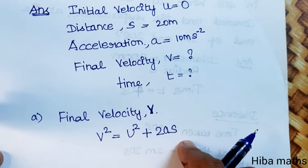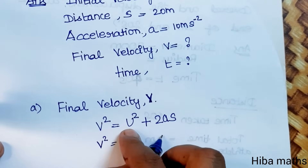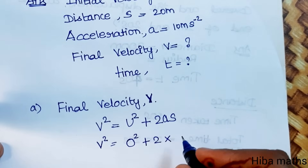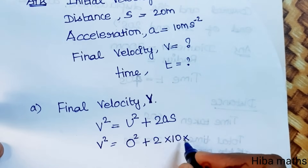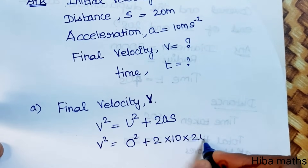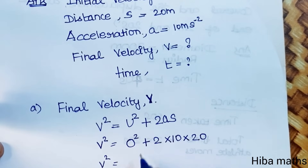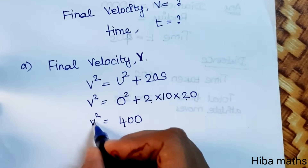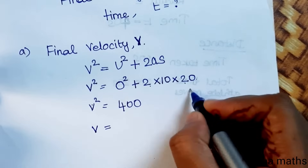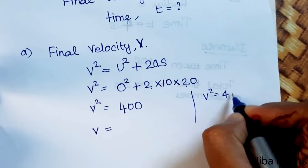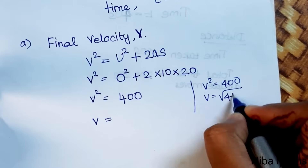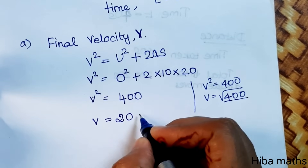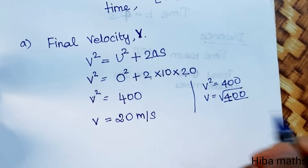v square is equal to u square plus 2as. u is 0, so u square is 0. v square equals 0 plus 2 into 10 into 20, which gives v square equal to 400. Therefore v is equal to root of 400, which is equal to 20 meters per second.